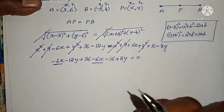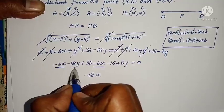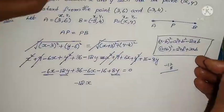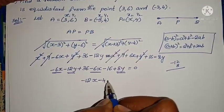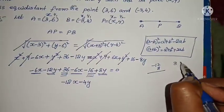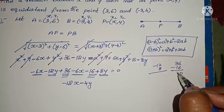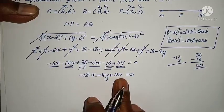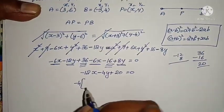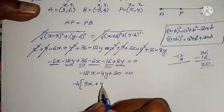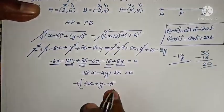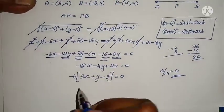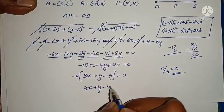Remaining: minus 6x minus 12y plus 36 equals plus 6x plus 16 minus 8y. Sending everything to one side: minus 12x minus 4y plus 20 equals 0. Taking minus 4 as common: minus 4 times (3x plus y minus 5) equals 0. Sending minus 4 to the other side, 0 divided by minus 4 is still 0. So the relation is 3x plus y minus 5 equals 0.